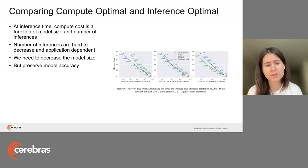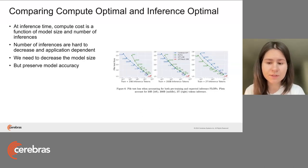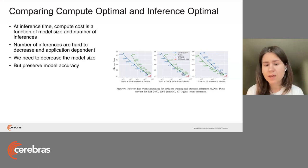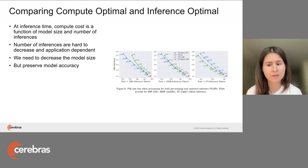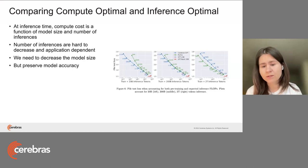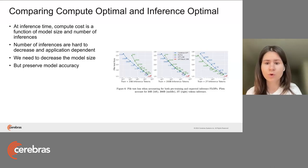There's a useful tool — click the link — that lets you specify model parameters, like 10 billion parameters and a number of training tokens, for example 200 billion in Chinchilla style. The tool predicts the estimated loss value at the end of training and helps you convert compute optimal to inference optimal. For example, a 10 billion parameter model trained for 200 billion tokens in Chinchilla style can be converted to a 5 billion parameter model trained on 558 billion tokens. It's way over-trained but small enough to be efficiently deployed at inference time.